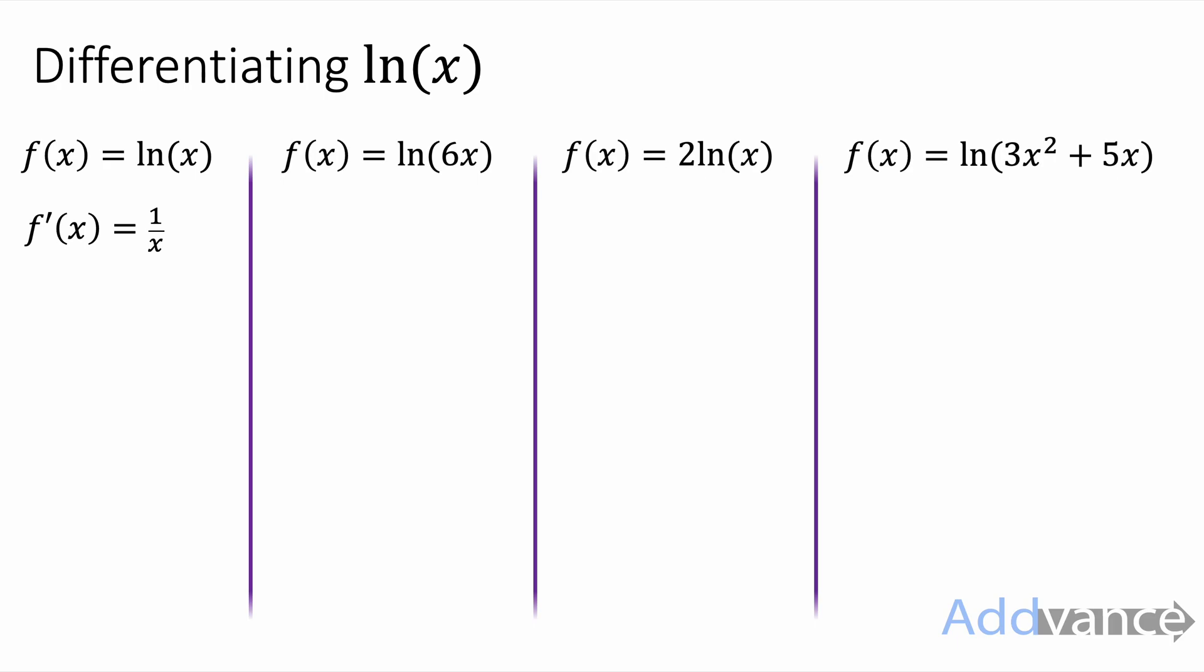Some other examples look like this. f of x equals ln 6x. Well by the chain rule that differentiates to be 6 over 6x. But that simplifies again to be 1 over x. And in fact that's true for ln of any number times x. ln of 8x, ln of 9x always differentiates to be 1 over x.